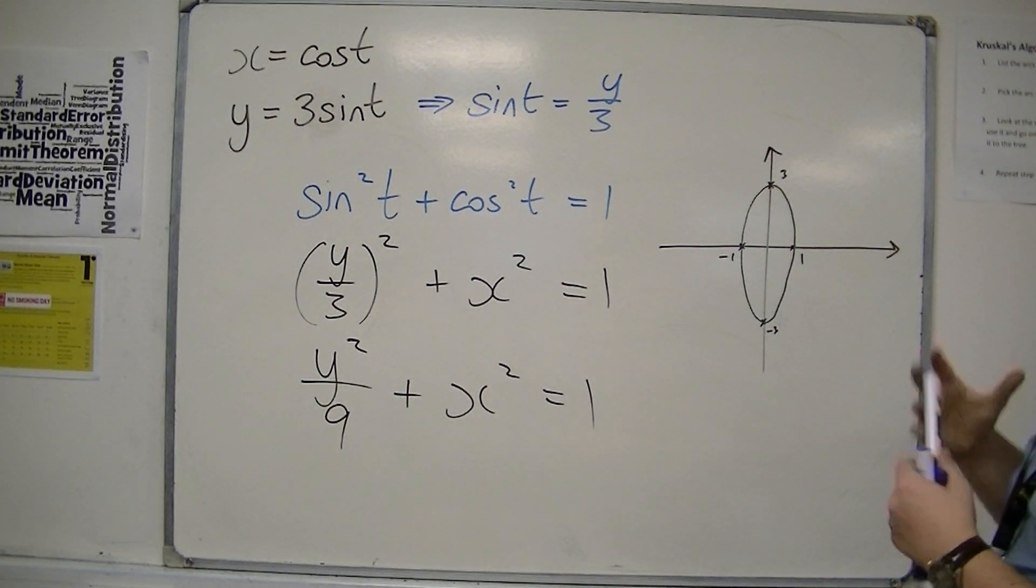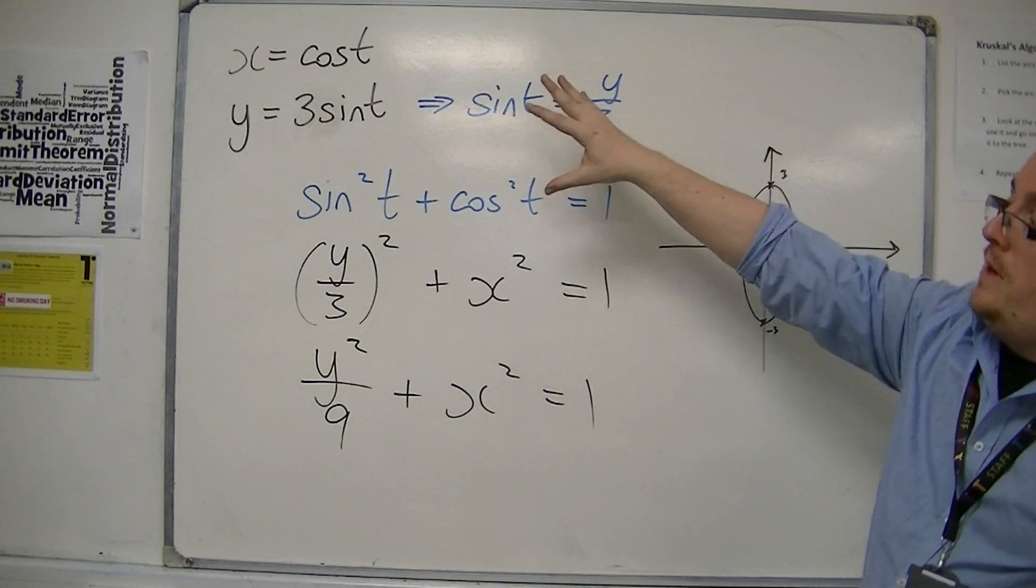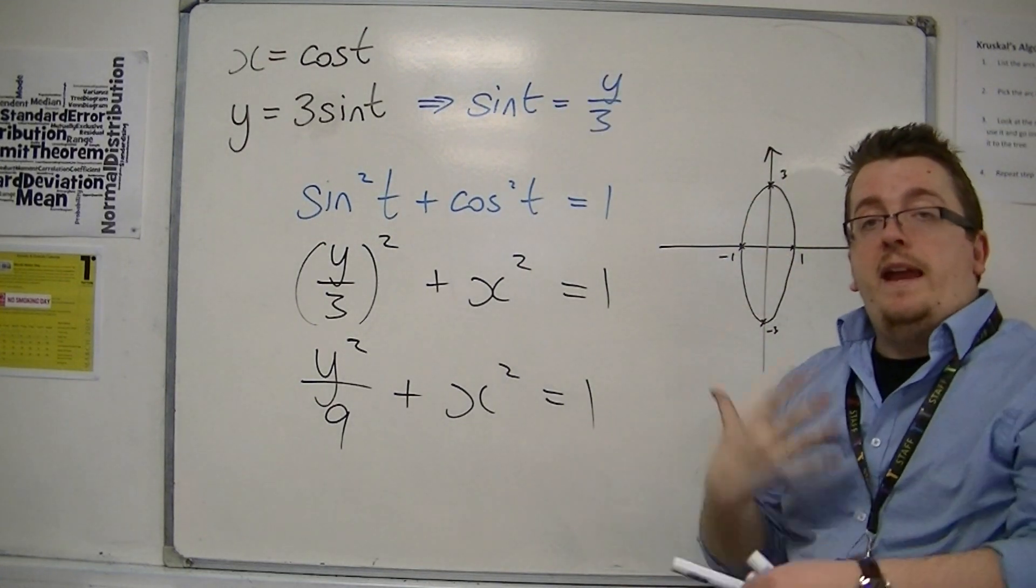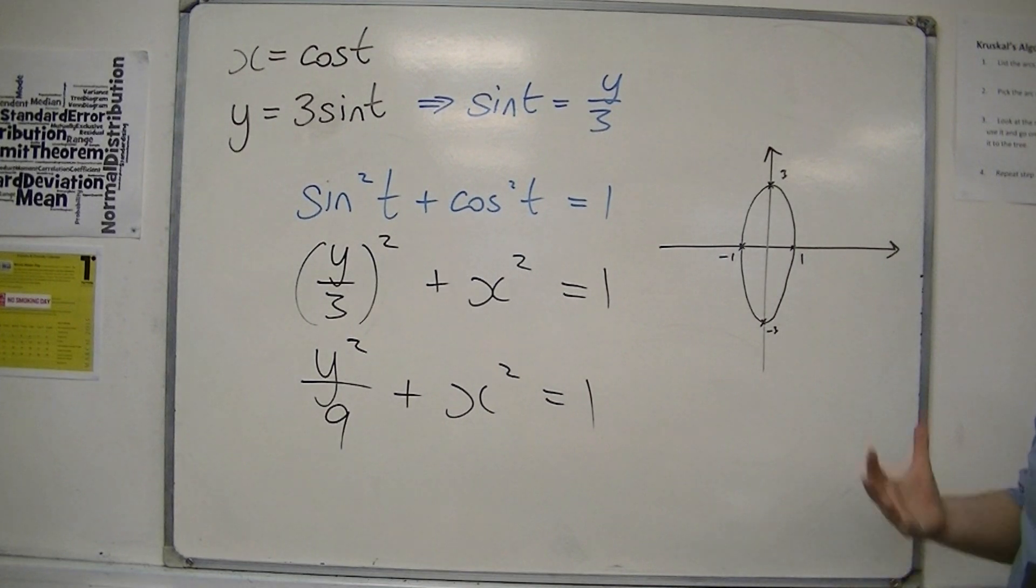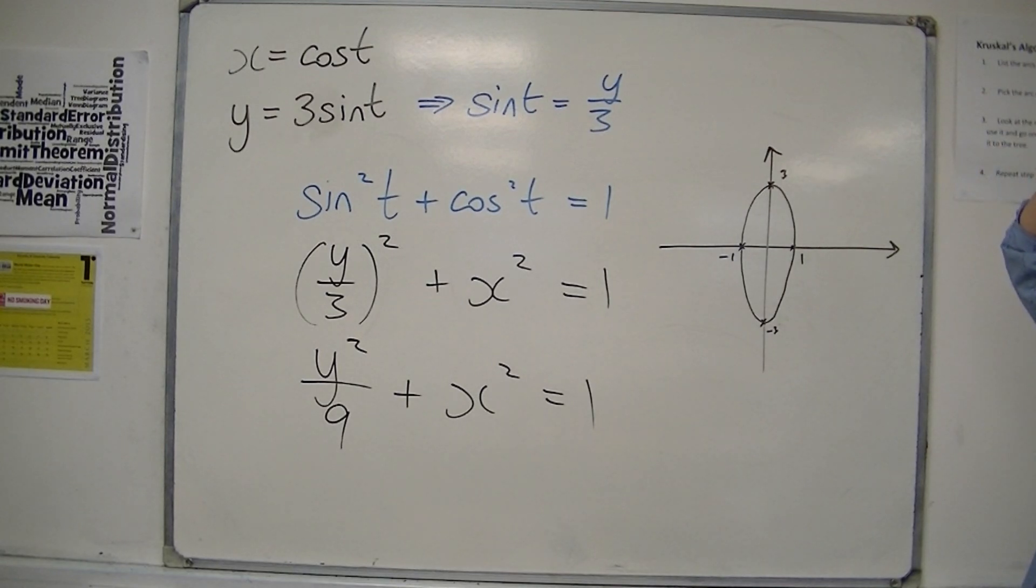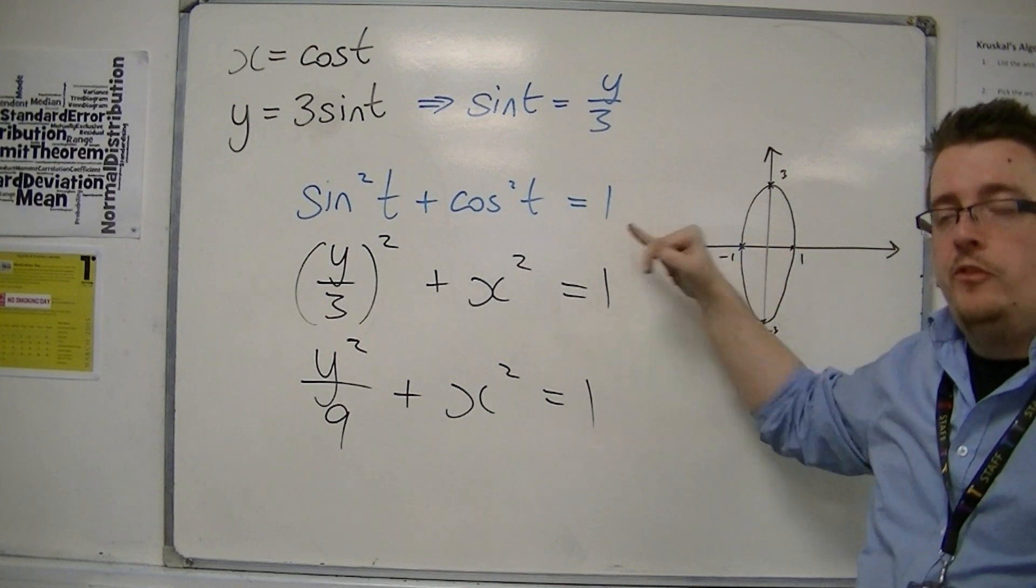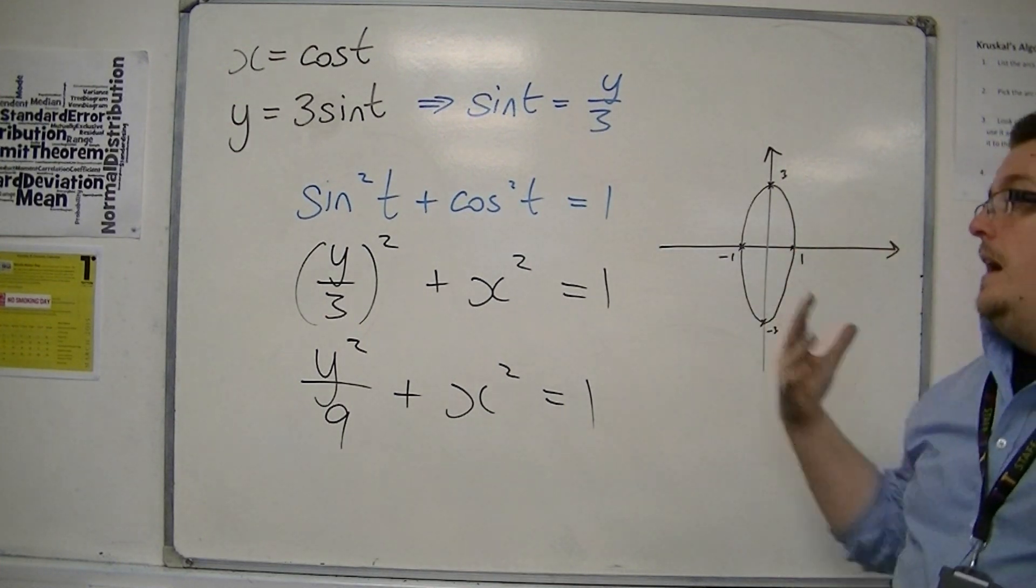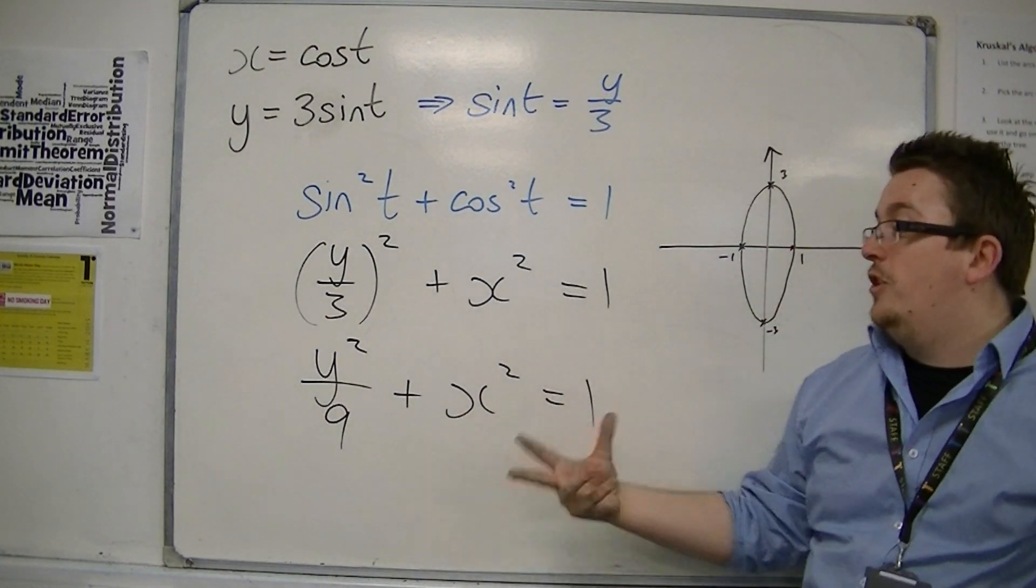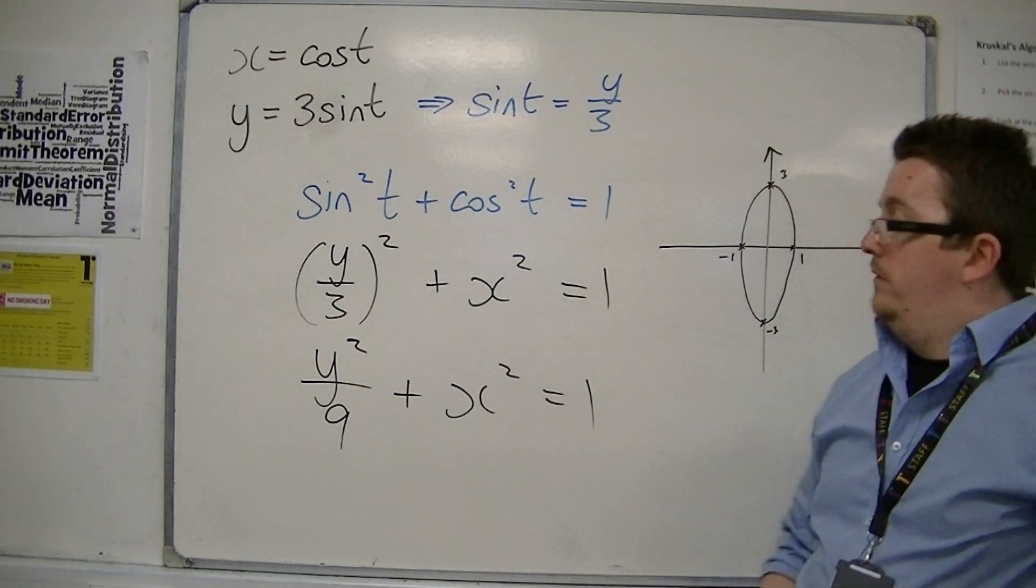As you can see, parametric equations can be used to simplify the concept of things like circles and ellipses. They're quite easy to put straight into the sine squared plus cosine squared equals one trig identity, and then to get a Cartesian form, and then much easier to sketch it to see exactly what it is.